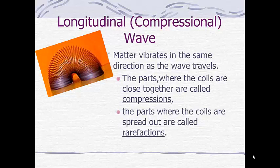On a longitudinal wave, the parts where the coils are all close together is called a compression, and the parts where the coils are all spread out are called a rarefaction. That's analogous to the crest and trough on a transverse wave, but we use different terminologies for a different type of wave.